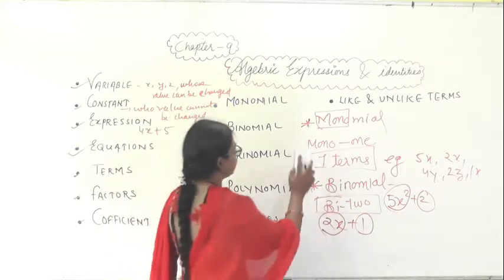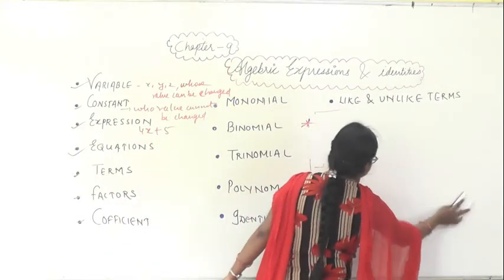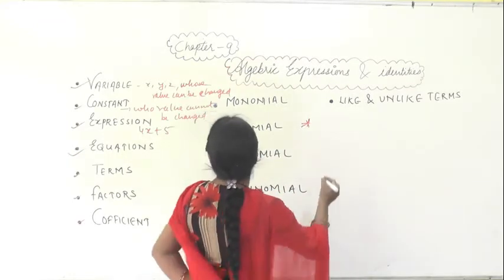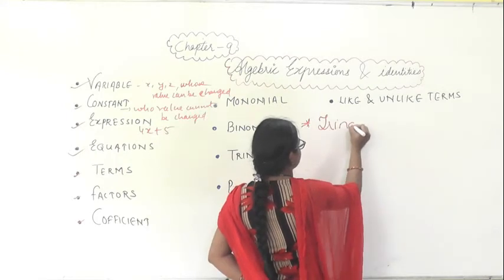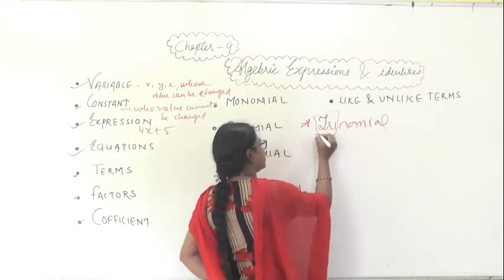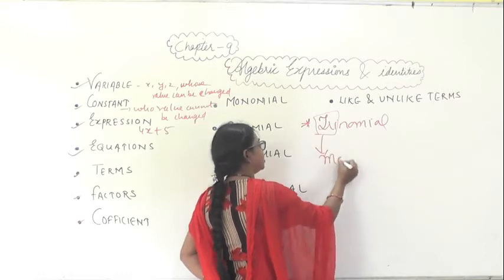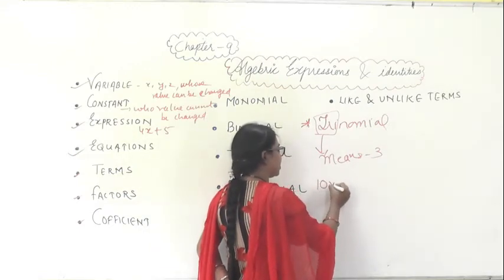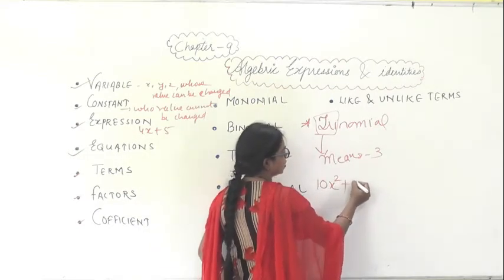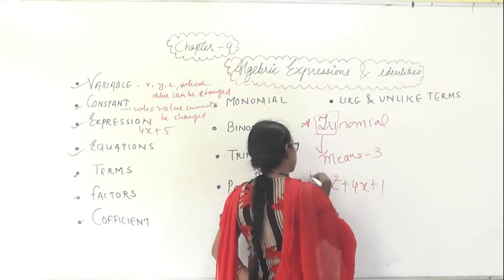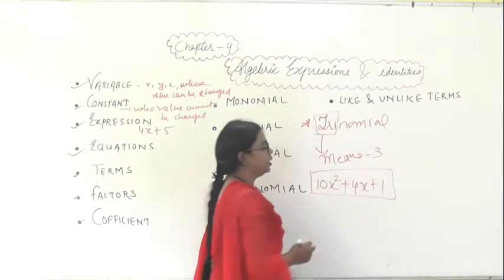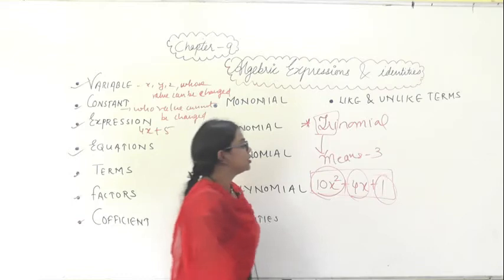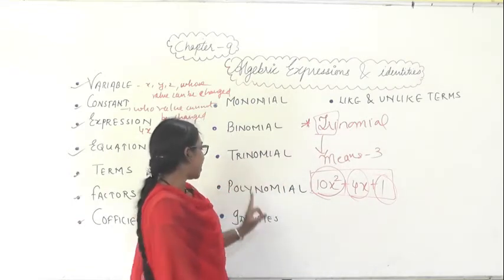Similarly, trinomial. 'Tri' means three, so a trinomial will contain three terms. For example, if I write 10x squared plus 4x plus 1, this is a trinomial because three terms are there: 10x squared, 4x, and 1. So this comes under the category of trinomial.